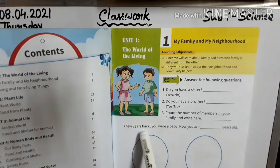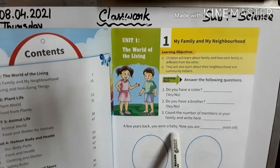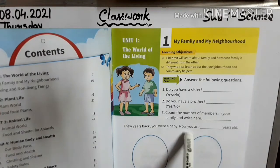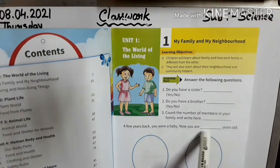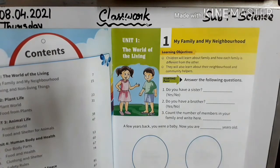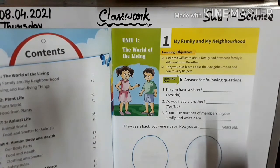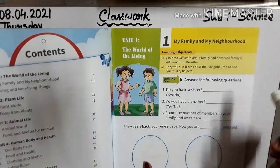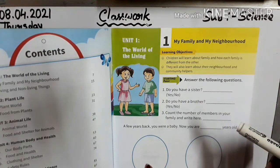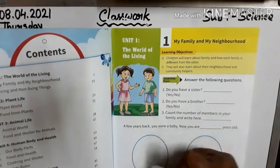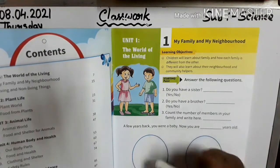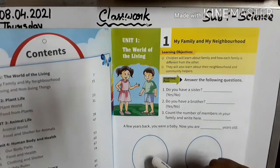A few years back you were a baby. Now write how old you are — five, six — write your age here. Also, paste your photograph as a baby. Paste your own baby photo here.